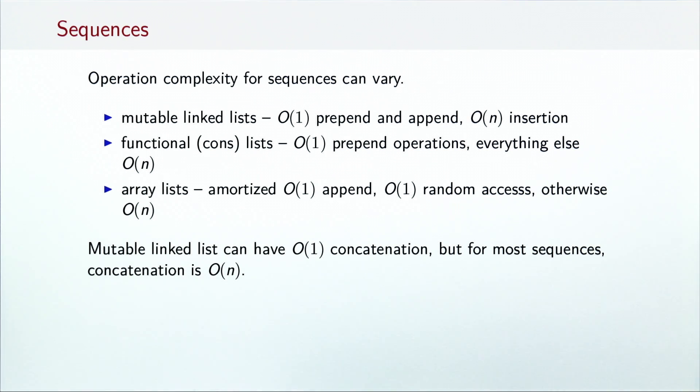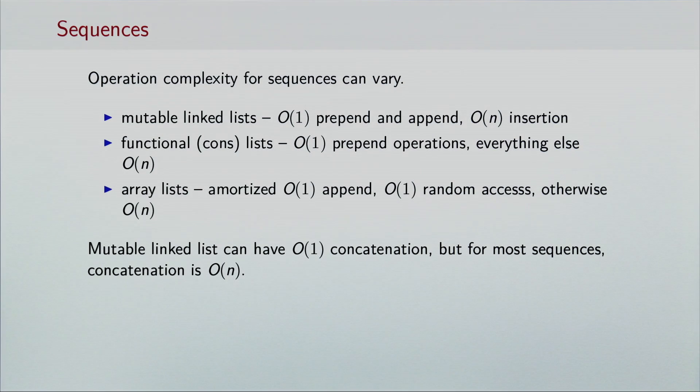This lecture should have convinced us that implementing combiners is not trivial. Since most of these data structures do not have an efficient concatenation or union, providing a combiner for the corresponding collections is not straightforward. However, things are not so grim. In the next lecture, we will see that it is indeed possible to implement efficient combiners for these data structures, and we will study the techniques used to do this.